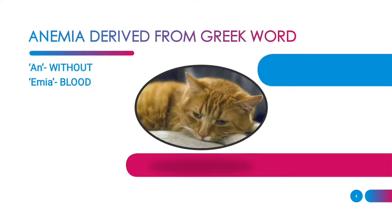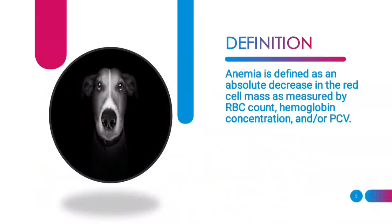What is anemia? The word anemia has been derived from the Greek word 'an' meaning without and 'emia' meaning blood. The Merck's Veterinary Manual defines anemia as an absolute decrease in the red cell mass as measured by RBC count, hemoglobin concentration, and/or pack cell volume. According to the textbook of Clinical Veterinary Medicine by MC Sharma, anemia is defined as a reduction in the amount of hemoglobin per unit volume of blood that may or may not be accompanied with reduction in red blood cells.